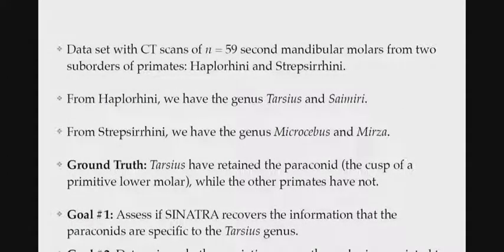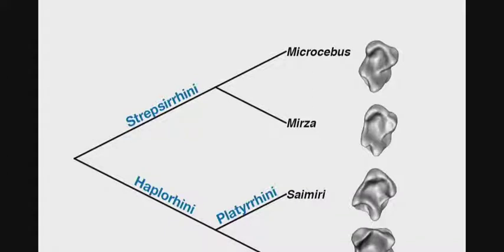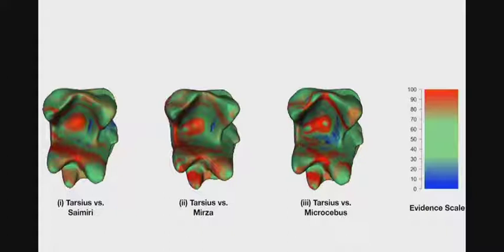For a real data set, we didn't work with the tumors because we didn't really know what ground truth would be. We had a lot of molars. Some were for lemurs, some were from other monkeys. We wanted to see if we recover what we know about how the shape is changing in terms of evolution. This is a paraconid, it's a bump on the molar. We know that as you get evolutionarily further, it changes. What we ask is, if I compare this one to this one, this one to the third one up, this one to the fourth one up, how different or similar are they? What's our measure of evidence? That's what the picture is. The Tarsus for the Sumeri, red is bigger, you don't see that much evidence against it. Those are the ones that are evolutionarily the closest. Then as you get further and further, you get evidence for the paraconid being different.